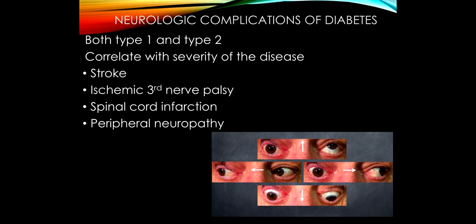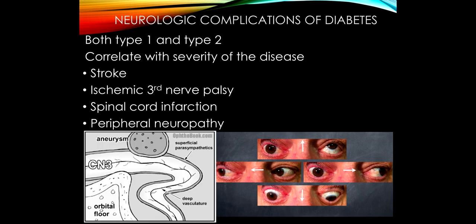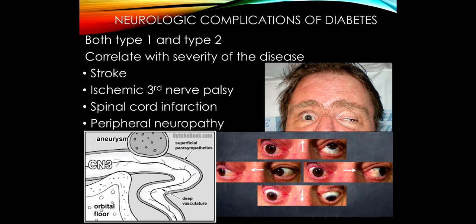I wanted to remind you about the ischemic third nerve palsy because it is such a distinctive feature in these patients. Things in neurology are usually not 100%. When you think of a third nerve palsy, you imagine every patient is going to have an eye that is down and out with complete ptosis. Here's a patient — we can see the position of the eye, severe ptosis. This is a very severe third nerve palsy.